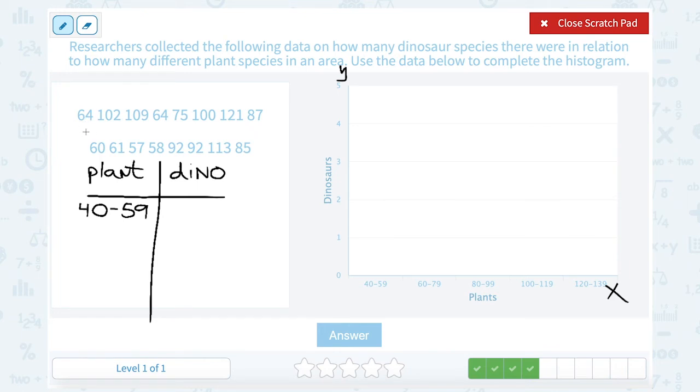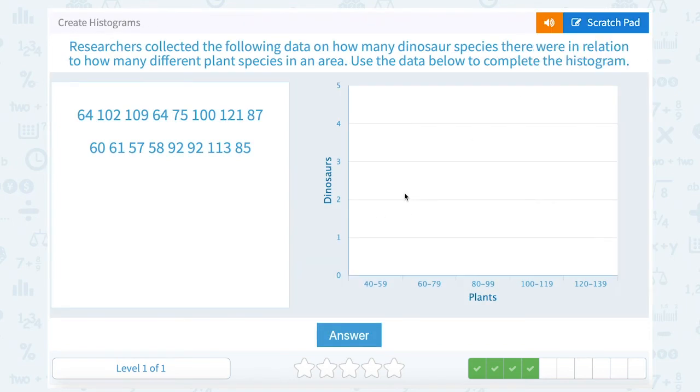Okay, so let's count how many of these numbers fall in between 40 and 59. I've got 64, 102, 109, 64, 75, 100, 121, 87, 60, 61, 57, 58, 92, 92, 113, and 85. Okay, so of all the numbers in that data, only two of those numbers fall between 40 and 59. Okay, so in my first bar here for 40 to 59, I'm going to go up to 2.